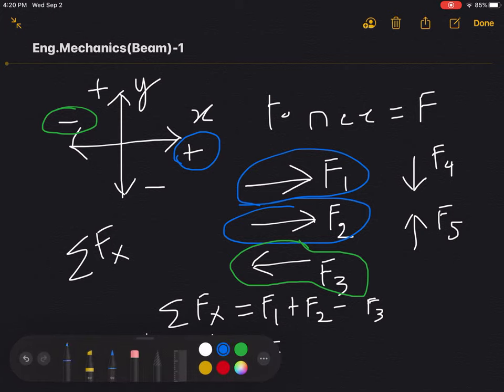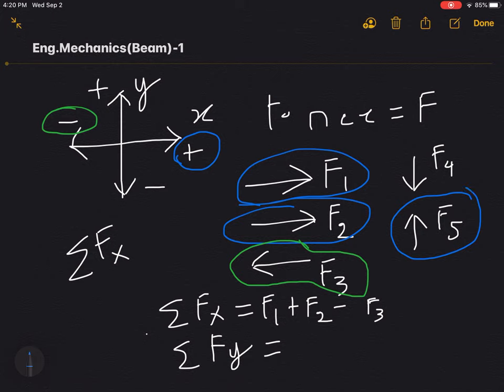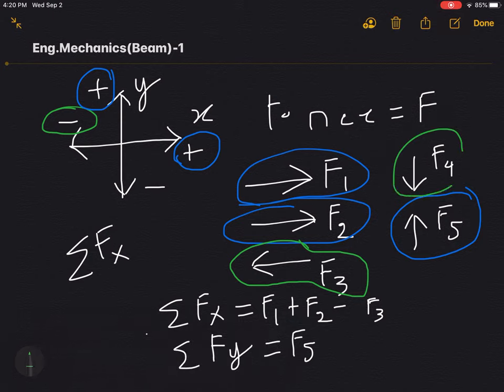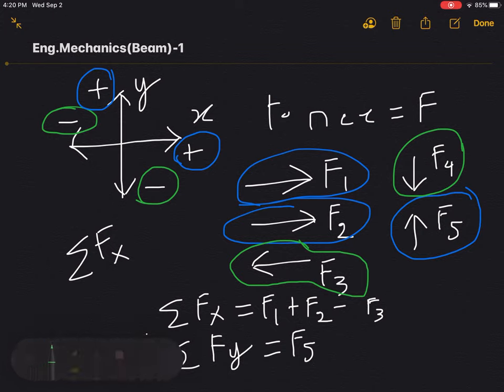So the force F5 is moving upward. That would mean that the force is positive. So we write F5 as positive. Then the force F4 is moving downward. That would mean that the force is negative. So we'd write minus F4. So we have our equations ready.